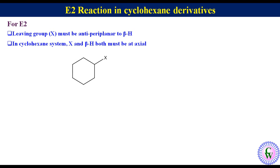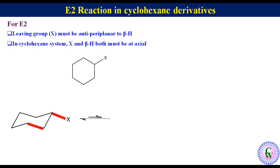Suppose we have a mono-substituted cyclohexane with leaving group X. In the more stable chair conformation, X is at the equatorial position. In this conformation, the C–X bond is anti-periplanar to a C–C bond, so the E2 reaction will not occur. In contrast, in the less stable chair conformation, X is axial and there is one axial proton on each beta carbon.